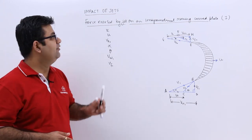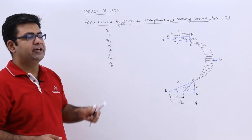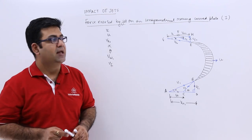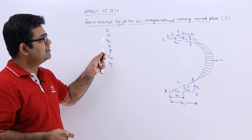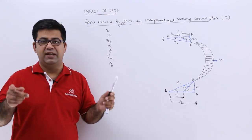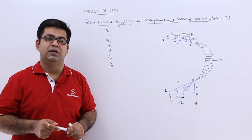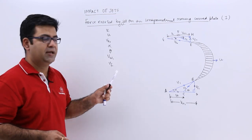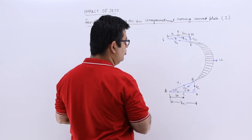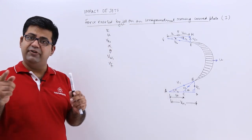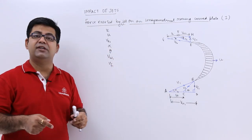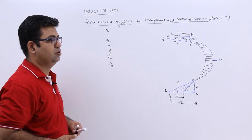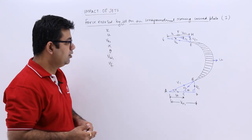In this video, we will talk about the force exerted by the jet onto an unsymmetrical curved moving plate. I have split this topic into two videos and this is the first part. In this part, I will introduce two triangles to you, and in the next video on the same topic, I will discuss the calculations based on these two triangles.